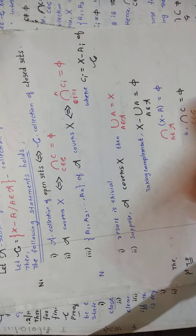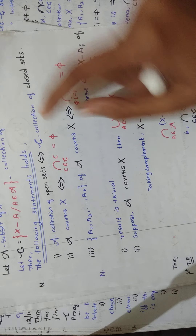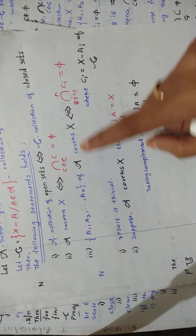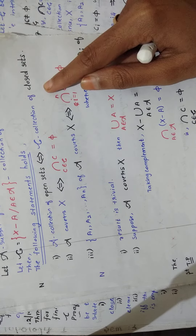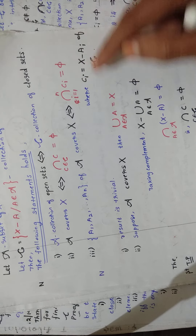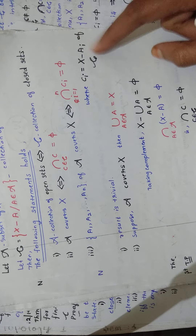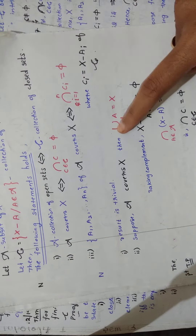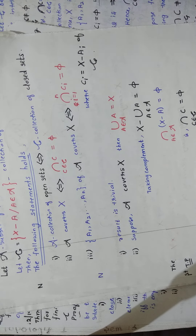Second condition: A covers X if and only if the intersection of C for C belonging to script C equals empty. Third condition: the finite sub-collection A1, A2, ..., AN of script A covers X if and only if the intersection for i=1 to N of C_i equals empty, where C_i = X minus A_i.